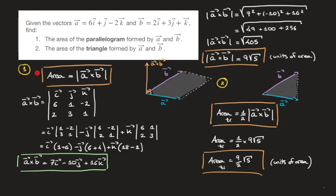A common question is whether the order in which we calculate the cross product matters. The answer is no — when calculating areas, the order doesn't matter at all. Since we're taking the magnitude of the cross product, whether we compute |a cross b| or |b cross a| makes no difference; both vectors have the same length, so the area calculated will be the same. We now know how to calculate the area of both a parallelogram and a triangle using the cross product.